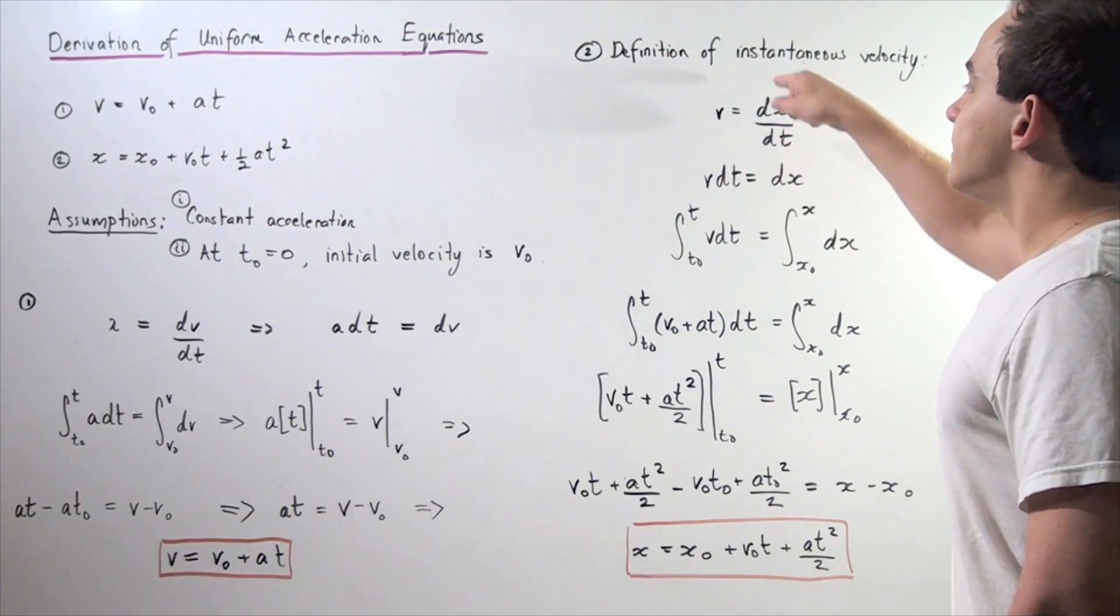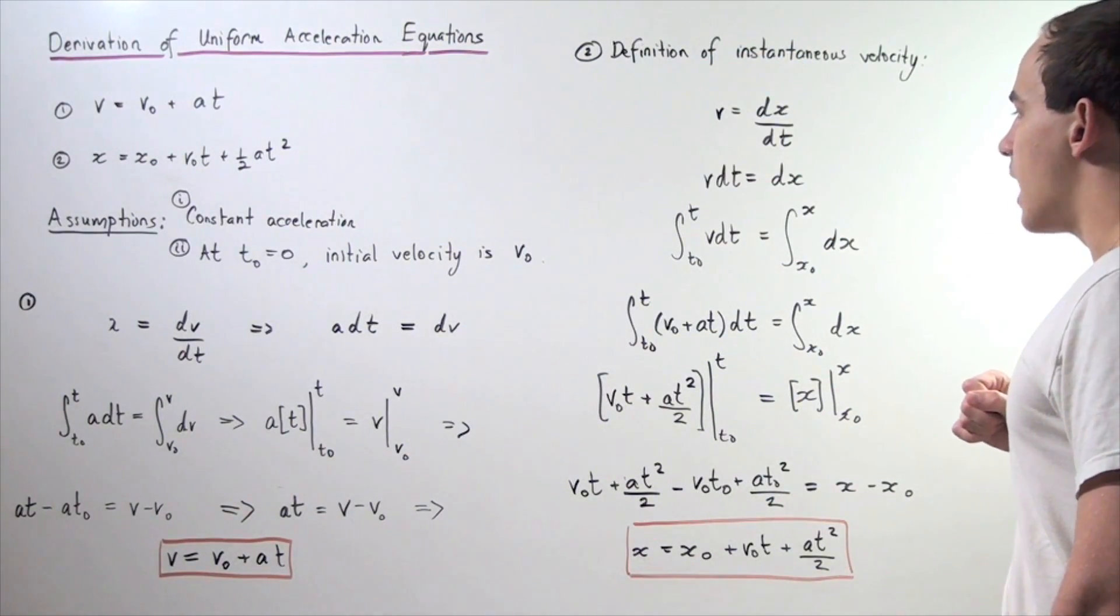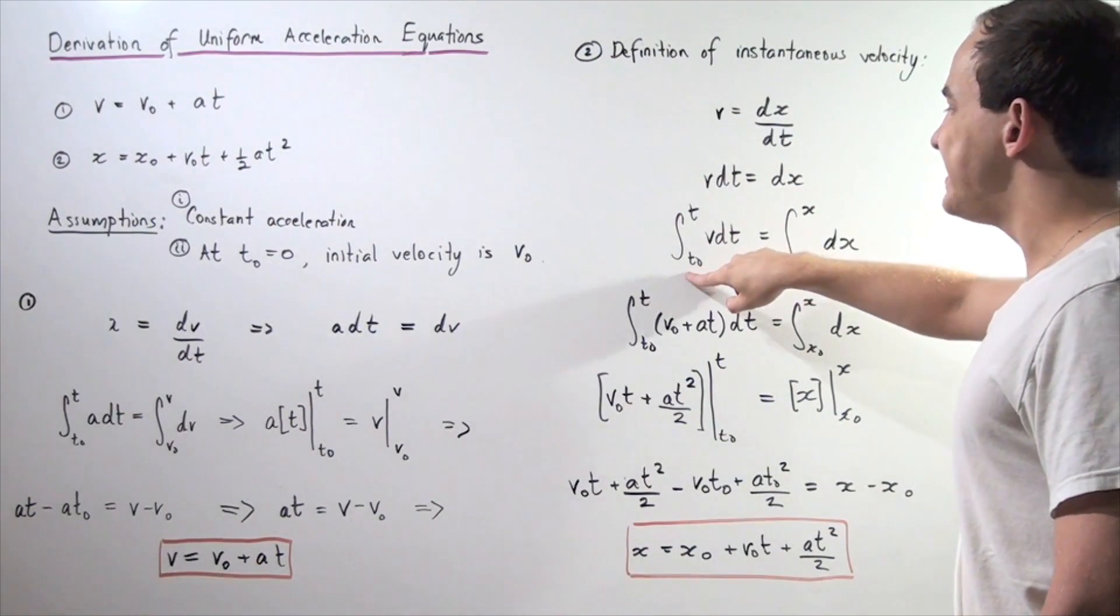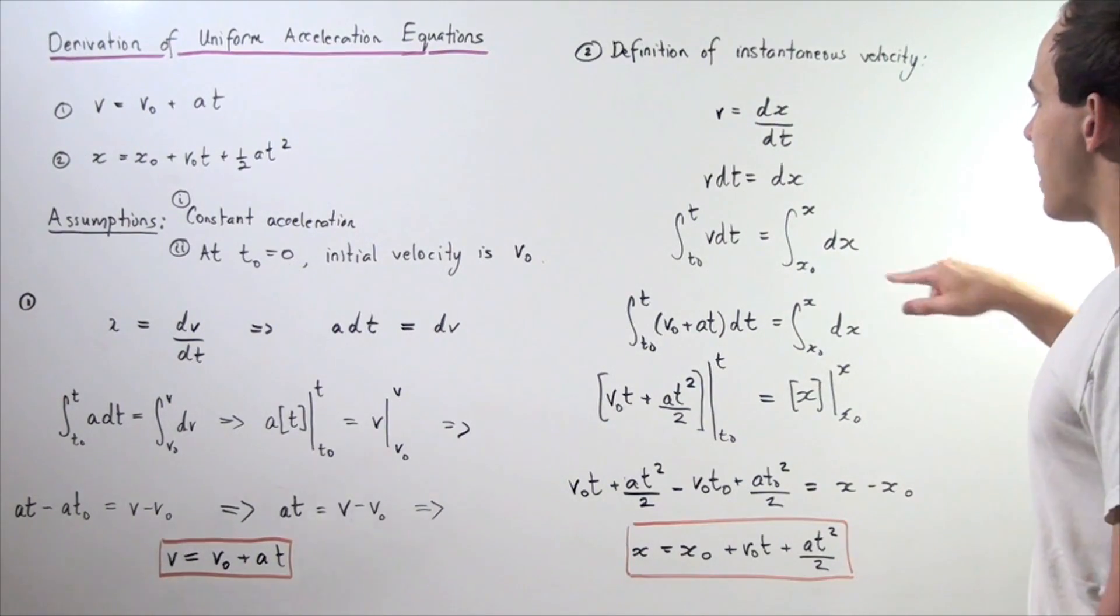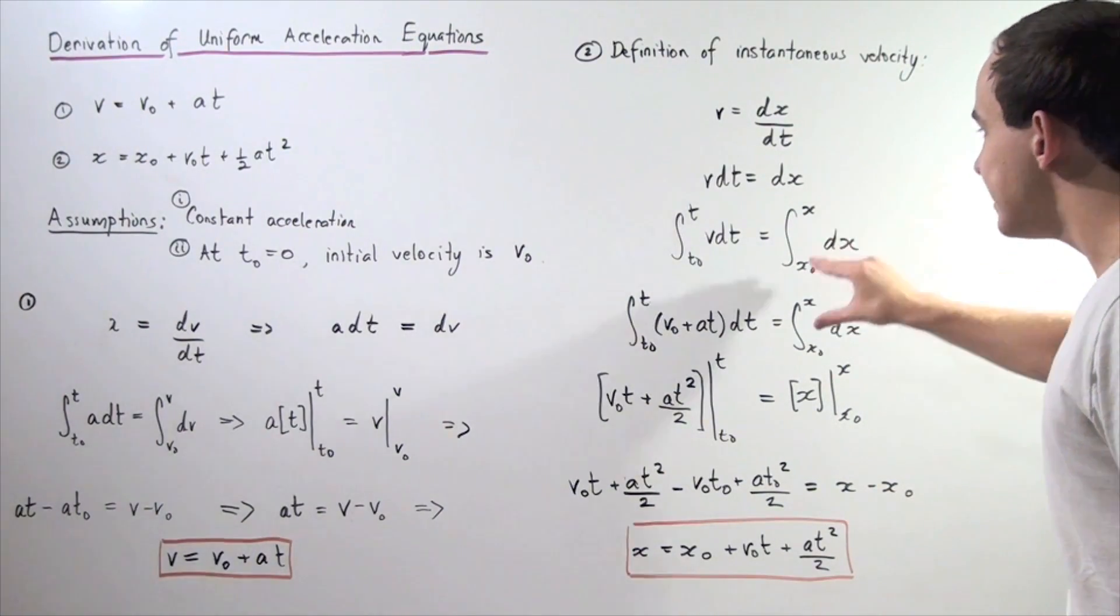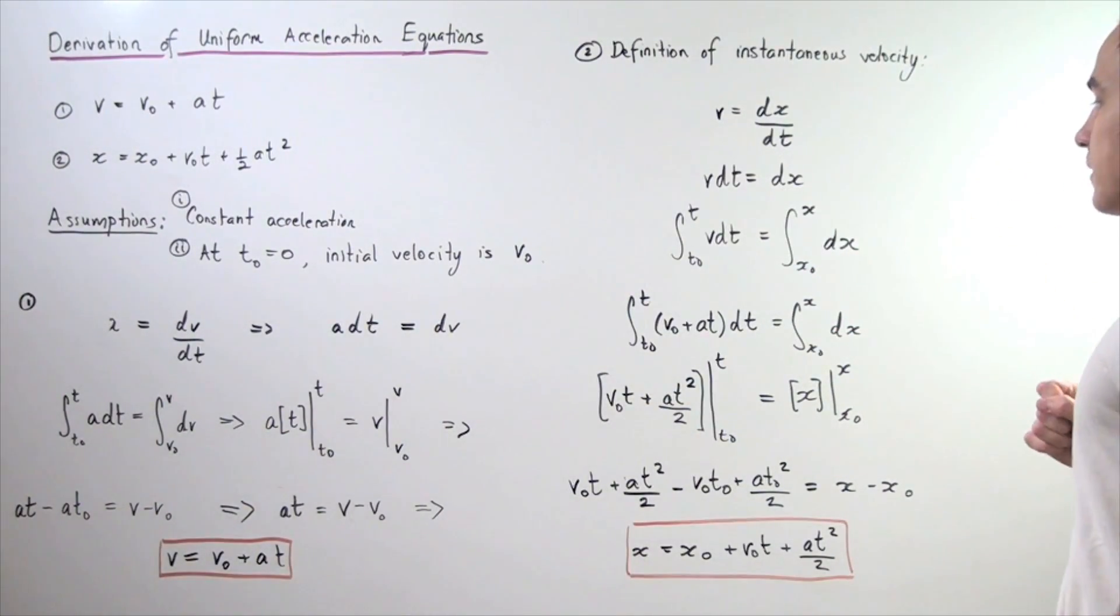Now, let's take the definite integral of both sides. Our left side, we take it from t initial, t-naught to t, and the right side, we take it from our x initial, our initial position, to our final position.